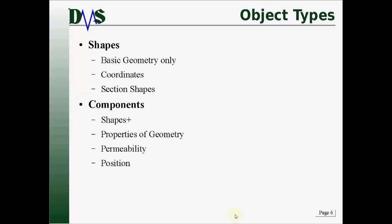A shape then feeds into a component. A component is basically that shape information plus some extra bits — now we're talking about the properties of geometry. That's what a component has: the geometry plus the properties of that geometry.